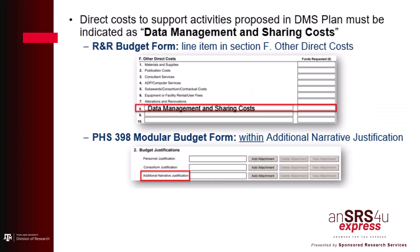The top example reflects how to show data management and sharing costs in the detailed R&R budget form. All direct costs for data management and sharing activities, including personnel costs specific to those activities, must be included in the single line item on the budget form. The line item must be titled Data Management and Sharing Cost. Do not combine data management and sharing costs with any other costs. If no costs will be incurred, enter zero in the funds requested column.